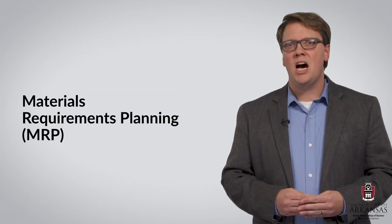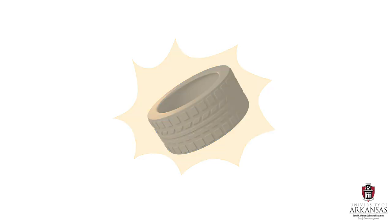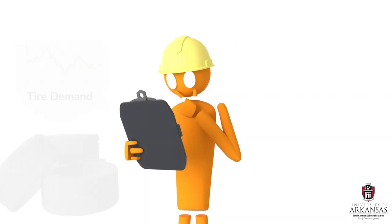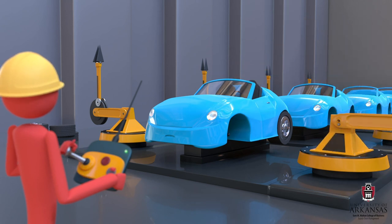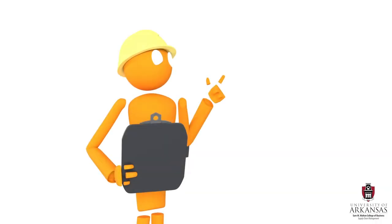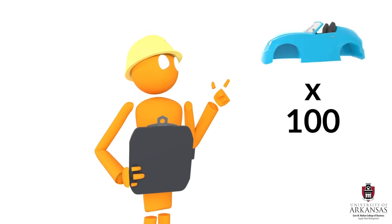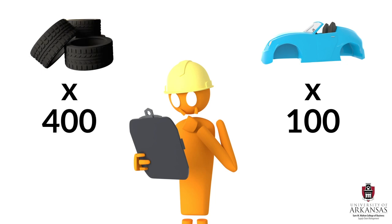To understand how MRP works, let's use the example of car tires for newly manufactured cars. Clearly, demand for car tires will be a function of demand for new cars. In other words, demand for assemblies, components, or parts, such as tires, is dependent on demand for end items, such as cars.